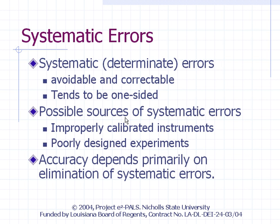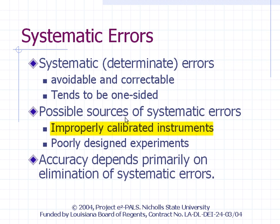Errors associated with measurements can be classified into two types. One type is called systematic or determinant errors — those that are avoidable or correctable. They tend to be one-sided, meaning results are consistently lower or consistently higher than the true value. One possible source of systematic error is an improperly calibrated instrument. You avoid the error by calibrating it properly — using the instrument to measure well-known values, then adjusting the readout to match.